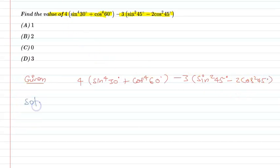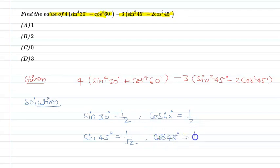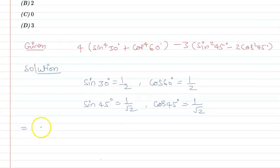My dear students, in trigonometry we know that sin 30 degree equals 1 upon 2, and cos 60 equals 1 upon 2, and sin 45 degree equals 1 upon root 2, and cos 45 degree equals 1 upon root 2. We will substitute these values here.